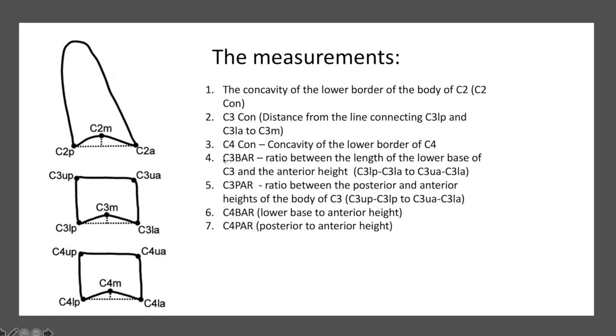The other measurements are the ratios. C3 bar is the ratio between the length of the lower base and the anterior height. This measurement indicates the shape of the cervical spine. Similarly, there is a measurement of the fourth cervical spine, which is C4 bar, the ratio between the length of the lower border of the spine to the anterior height. The two other ratios are C3 par and C4 par, which are the ratios between the posterior and anterior heights of the third and fourth cervical spines.